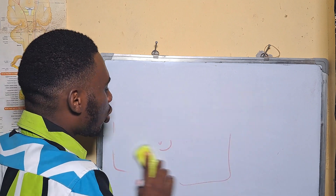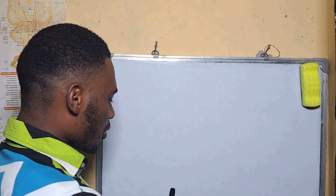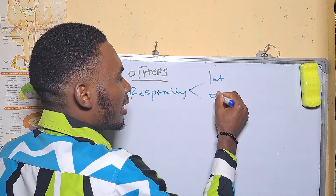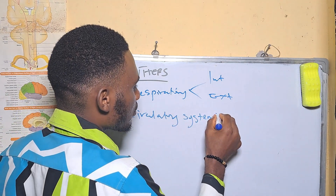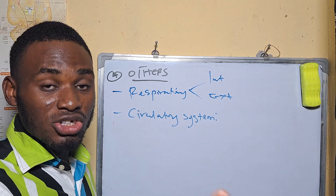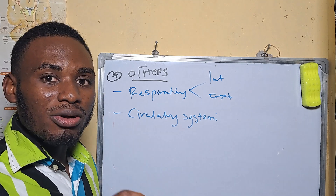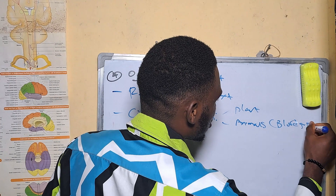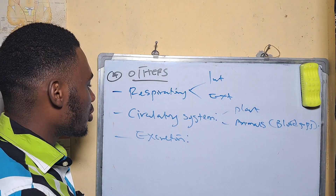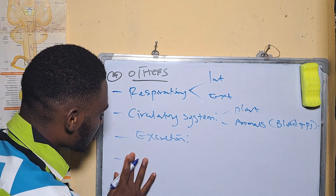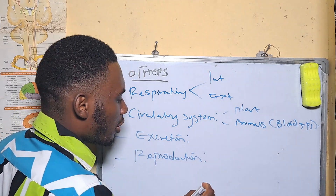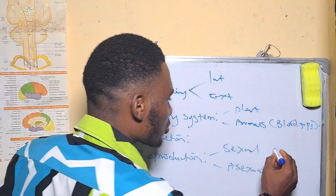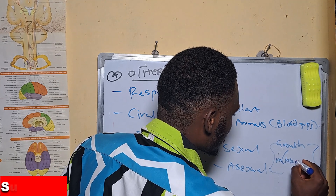Lastly, I have a category I call others. This is an umbrella for a lot of topics. In others, we have respiration — that's the internal and external respiration. We have the circulatory system, covering circulation in plants, that's the xylem and phloem circulation, and also circulation in animals, taking cognizance of the blood groups. We also have excretion, and you have to know about the excretion organs in animals. The next topic is reproduction, which can be sexual or asexual — you have to know how plants and animals reproduce. This goes together with growth, talking about mitosis and meiosis.